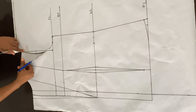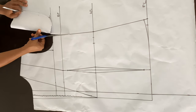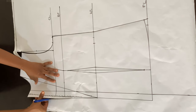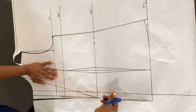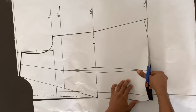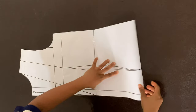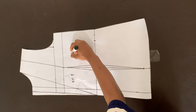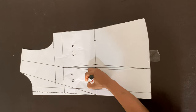Now we're going to cut along the outline of this piece to get our front piece all done. The next thing is to label our pieces: this is center front one and side front two.